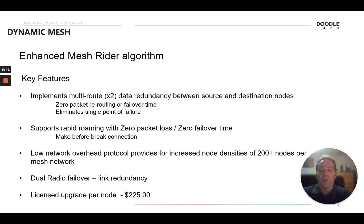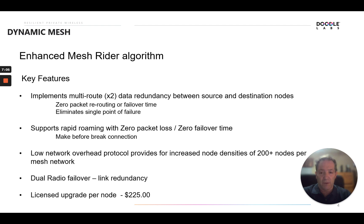Multi-route redundancy is also advantageous for mesh roaming and mobility applications. A mobile node will generate two connections: one data stream to the node it's currently adjacent to, and a secondary data stream for the node it's approaching. The primary stream will be the adjacent node, but as it approaches the secondary node and that link becomes better based on least cost routing, a transition will occur and the approaching node will become the primary — all with zero packet loss and zero failover time. In essence, it's a make-before-break connection.